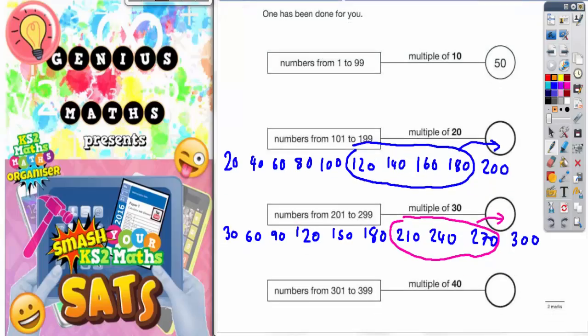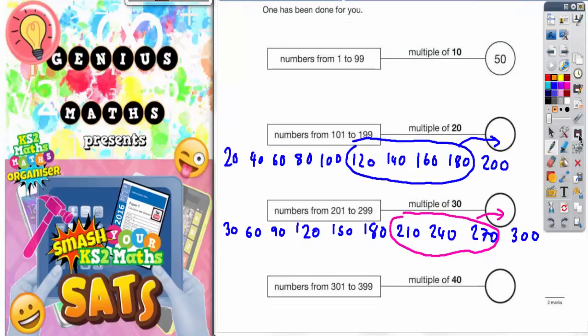The final one: numbers from 301 to 399, multiples of 40. So 40, 80, 120, 160, 200, 240, 280, 320, 360, 400. We could have any of the numbers between 301 and 399, so either of these two numbers could go into the answer box.